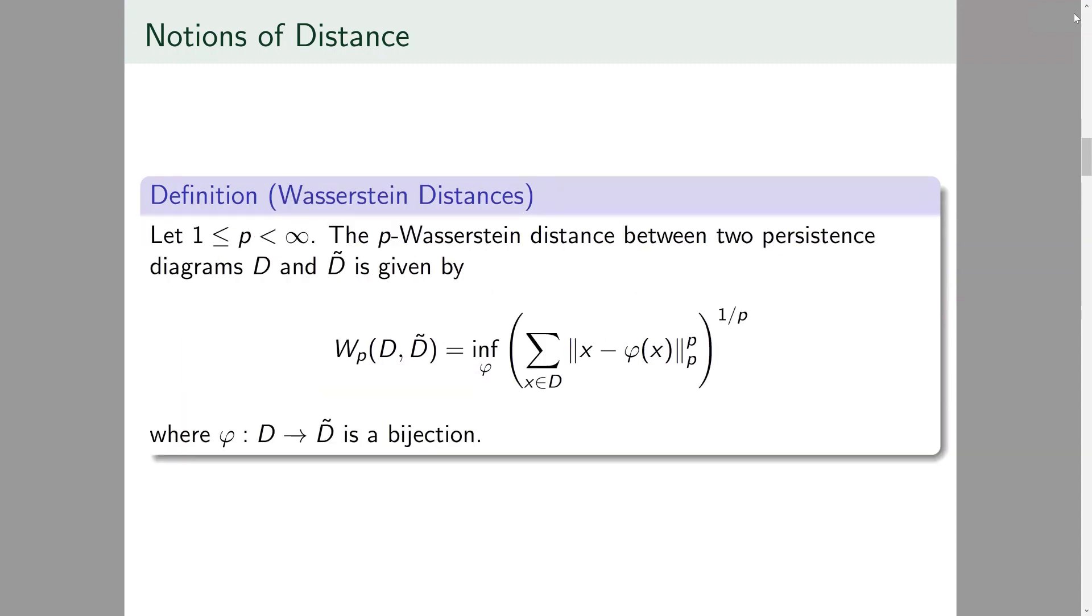The second way involves a collection of what are called Wasserstein distances. Here the p-Wasserstein distance calculates the infimal cost of collectively moving points in the LP metric. So it's the sum of shifting all points with respect to the p norm in R squared. I should note, however, that in many sources this is often called the p p Wasserstein distance as this definition does generalize slightly.